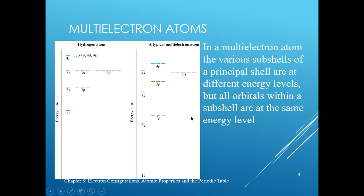When you get to a multi-electron atom, things are more complicated. Comparing hydrogen to a typical multi-electron atom side by side, you'll notice that, on average, the energy of all the orbitals in the multi-electron atom will be lower compared to the similar orbitals in the hydrogen atom. For example, the 1s orbital for hydrogen is here, but for the multi-electron atom it's drawn all the way down, and similarly for the 2s and 2p orbitals.